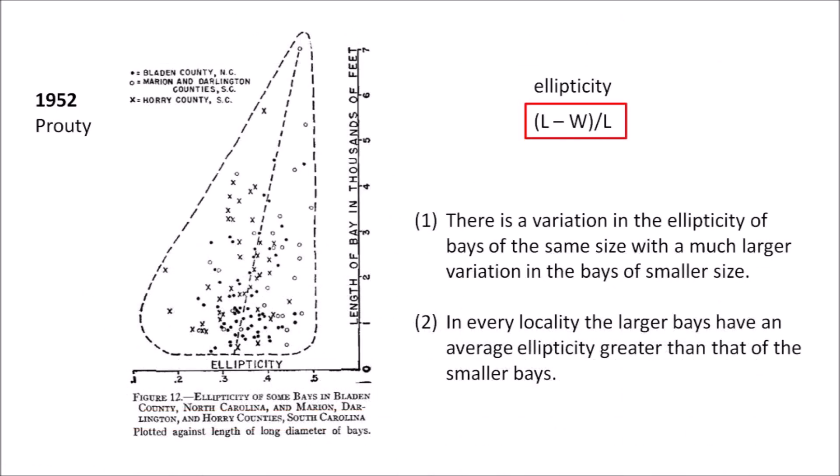Prouty produced a more extensive graph of the ellipticity of the bays plotted against their length. This figure shows the ellipticity of Carolina Bays in three different localities of North Carolina and South Carolina. The same general conclusion can be drawn from all three localities. There is a variation in the ellipticity of bays of the same size with much greater variation in the bays of smaller size.